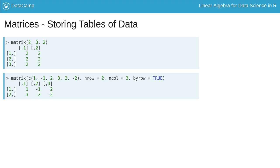Here a matrix is made using the matrix c 1 comma negative 1 comma 2 comma 3 comma 2 comma negative 2 comma nrow equals 2 comma ncol equals 3 comma byrow equals TRUE.